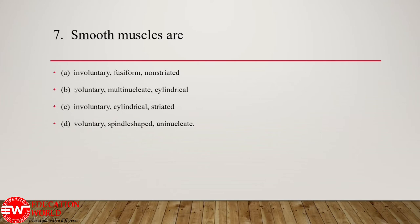Option B becomes invalid because the word 'voluntary' is added — smooth muscle fibers are involuntary, not multinucleated, not cylindrical; that is a feature of skeletal muscles. Option C is invalid because the word 'striated' makes it ineligible. Option D is invalid because the word 'voluntary' makes it incorrect. Hence the correct option is option A: smooth muscles are involuntary, fusiform, and non-striated.